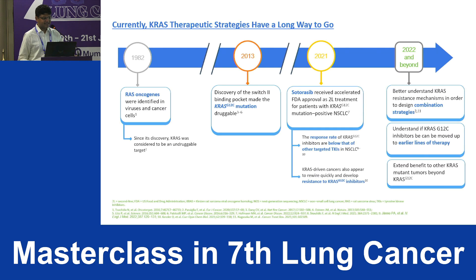This timeline shows how from identifying the RAS oncogene in 1982, and with KRAS G12C inhibitors available from 2022, we are now combining them with chemotherapy or immunotherapy, with multiple other options being tried. Hopefully in the near future we will have something we can target for KRAS-mutated patients. Thank you.